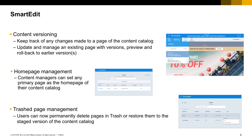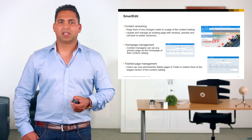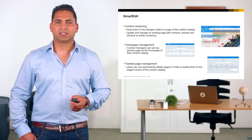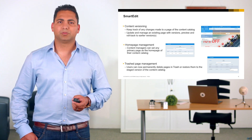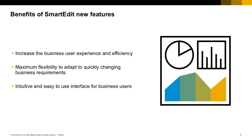Let's look at the new features in SmartEdit for customer experience management. The new content versioning feature allows SmartEdit users to keep track of any changes made to pages of the content catalogs. At any time, you can create a new page version, manage an existing one, preview it, and roll back to it. With the new homepage management feature, you can set the homepage of the content catalog and have the flexibility to permanently delete pages in trash or restore them to the staged version of the catalog. The enhancements in SmartEdit improve the experience of the business user, increase their efficiency, and allow them to quickly and easily adapt to ever-changing business requirements through an intuitive, easy-to-use interface.